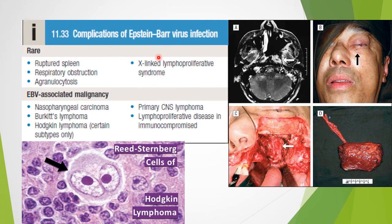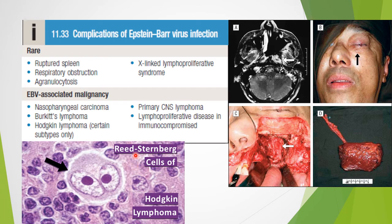Rare complications include ruptured spleen, respiratory obstruction, agranulocytosis, and X-linked lymphoproliferative syndrome. EBV can also cause malignancies such as nasopharyngeal carcinoma, Burkitt's lymphoma, Hodgkin's lymphoma, primary CNS lymphoma, and lymphoproliferative disease in the immunocompromised.